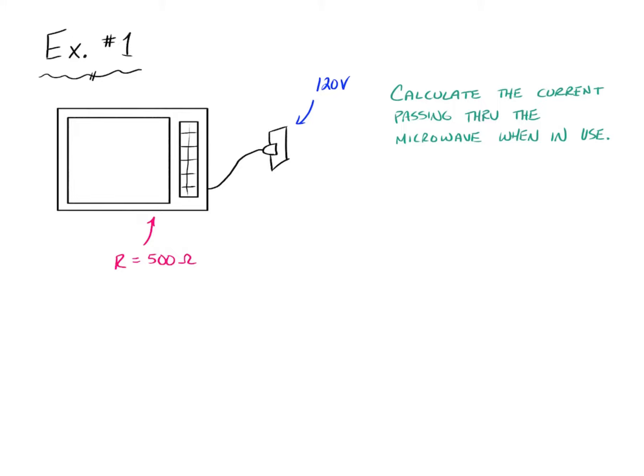In the first example, we have a microwave. We know it has an internal resistance of 500 ohms and it's plugged into a 120 volt wall outlet.